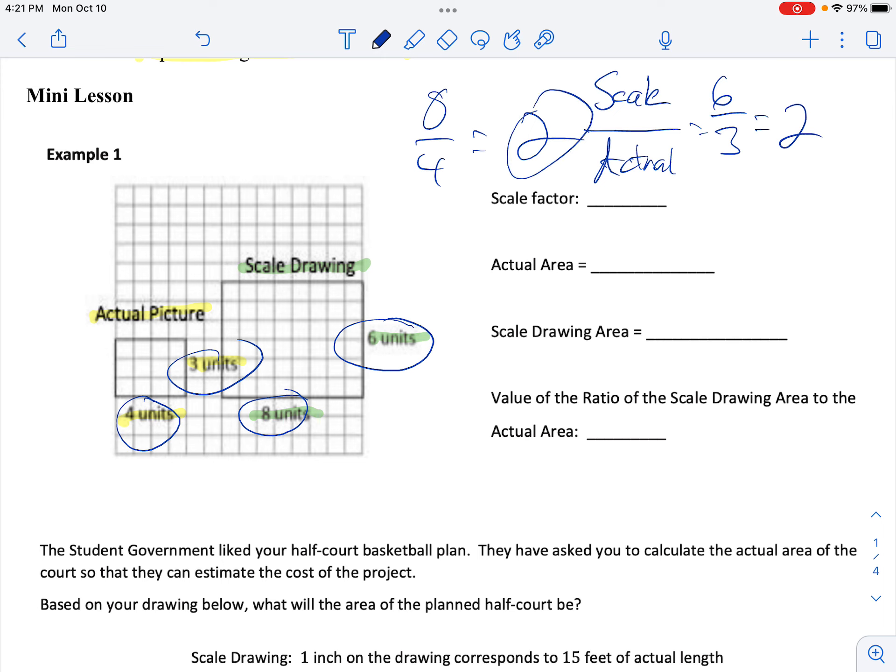Actual area. Well, actual is in yellow. 4 times 3 equals 12 units squared. Scale Drawing Area. Well, that's 8 times 6, which equals 48 units squared.